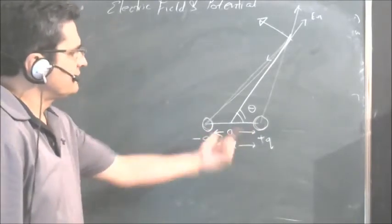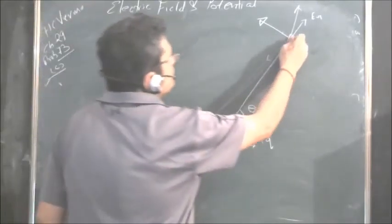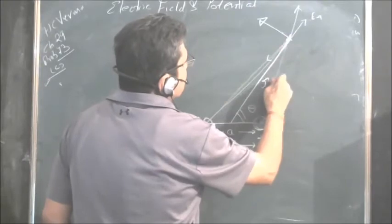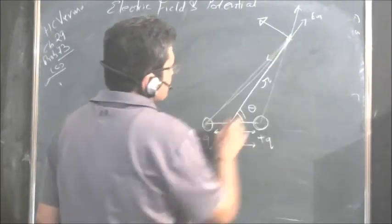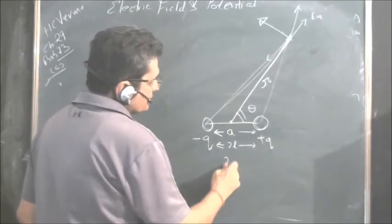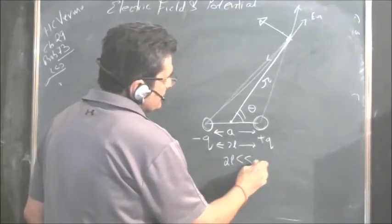There is a separation which is quite small compared to the distance R from the center of the dipole. This separation is quite small means 2L is very much less than R.